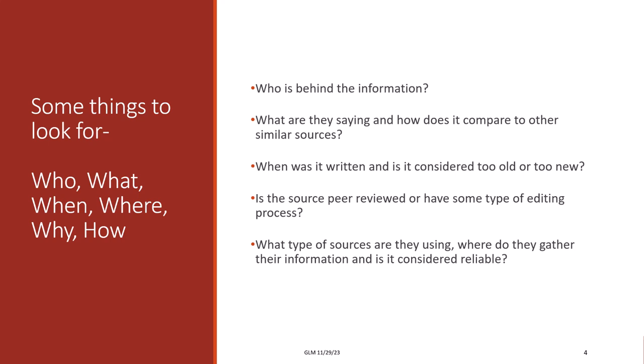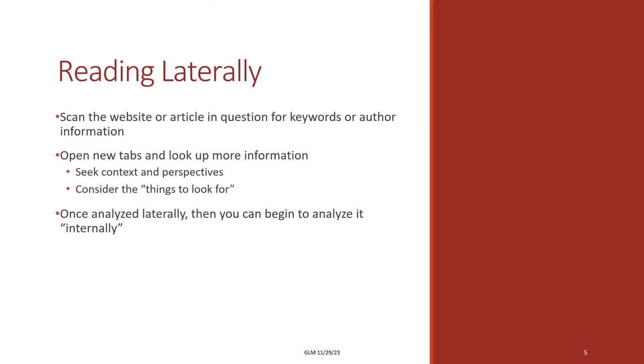The final set of questions, such as whether the source is peer-reviewed or subjected to any editing process, becomes crucial when assessing how these articles are utilized and ensuring their accuracy. This prompts us to consider the credibility of the information itself. Asking these questions involves reading laterally — when scanning a website or article, looking for keywords or author information. Open new tabs to seek additional context and perspectives, and after analyzing the context laterally, look at the article internally, considering its relevance to your research.